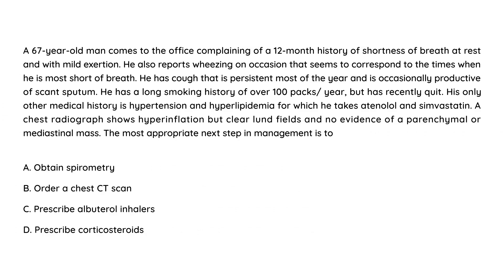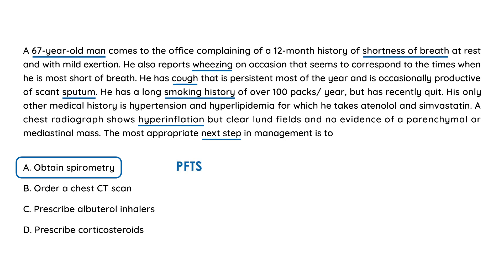Vignette 1: A 67-year-old male with 12 months of shortness of breath, wheezing, persistent productive cough, and over 100 pack-year smoking history presents. Chest X-ray shows hyperinflation but clear lung fields. The most appropriate next step is to obtain spirometry (PFTs). A CT chest is too expensive as a first step, and prescribing albuterol or corticosteroids requires PFT confirmation first. The answer is A — obtain spirometry.